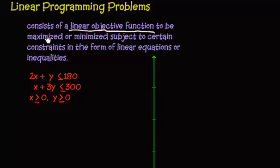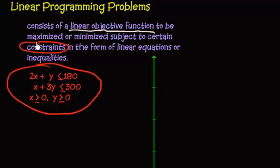Now a linear programming problem consists of a linear objective function, and we'll talk about that in a second, to be maximized or minimized subject to certain constraints in the form of linear equations or inequalities. So right here, these are our constraints.